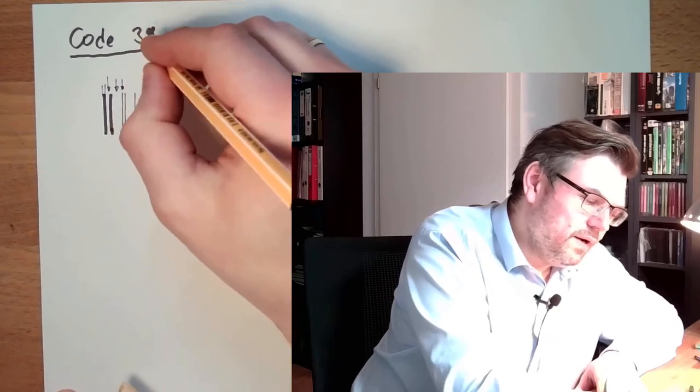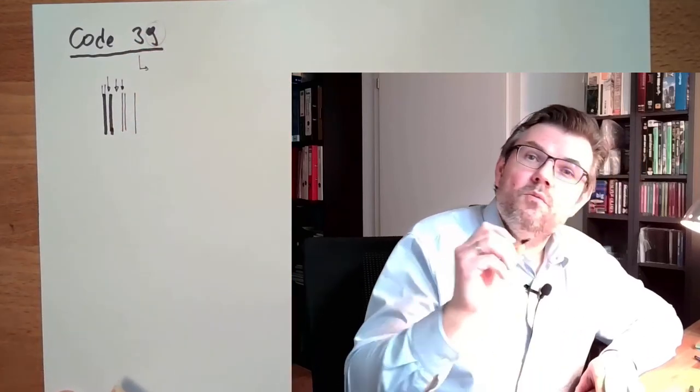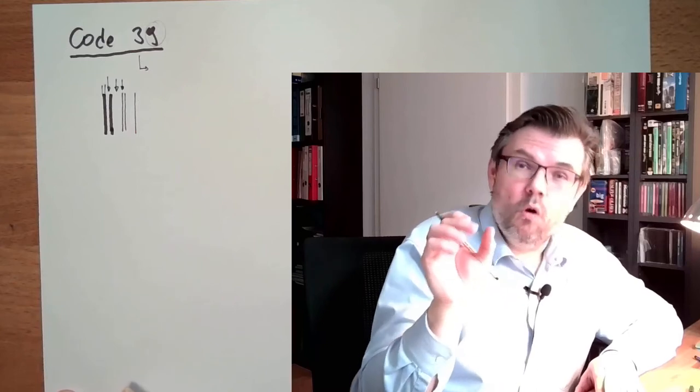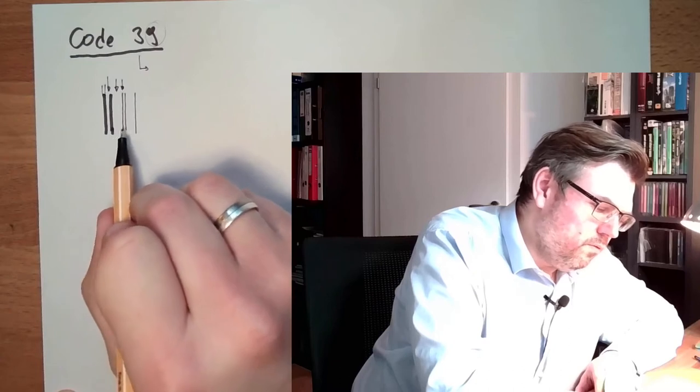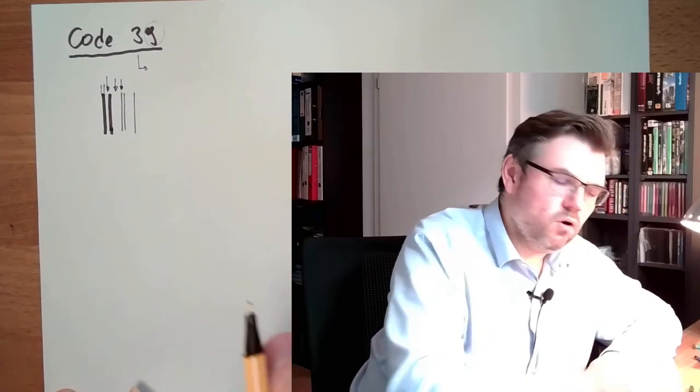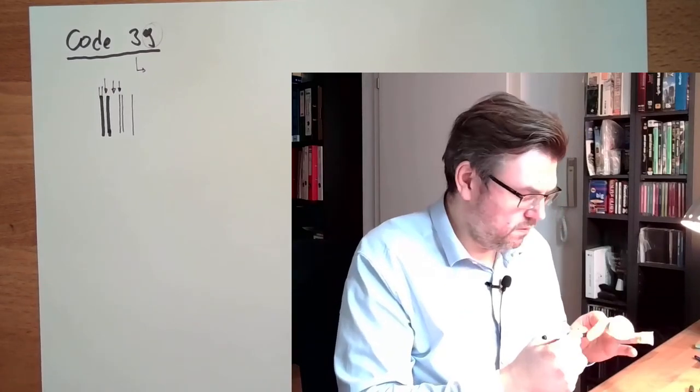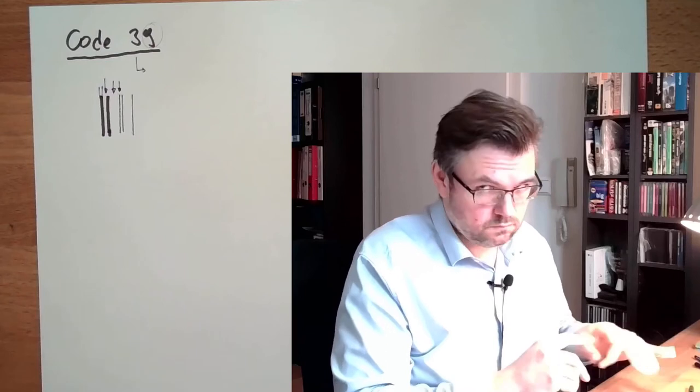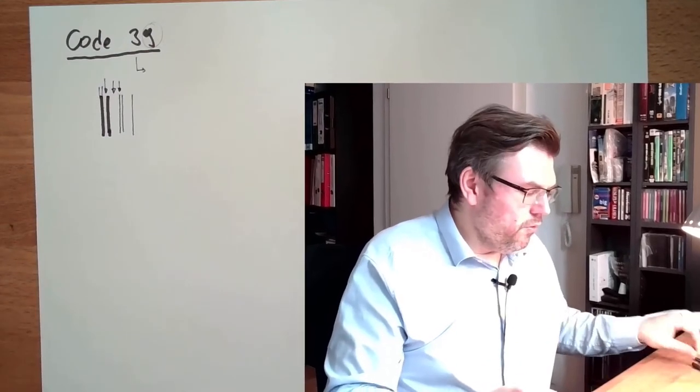This nine is why it's called nine, and the three here is because we only have three broad things. In this example, this would not be Code 39, this is just some random pattern of stripes.